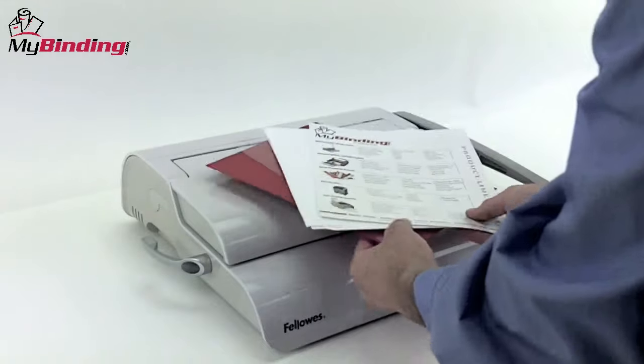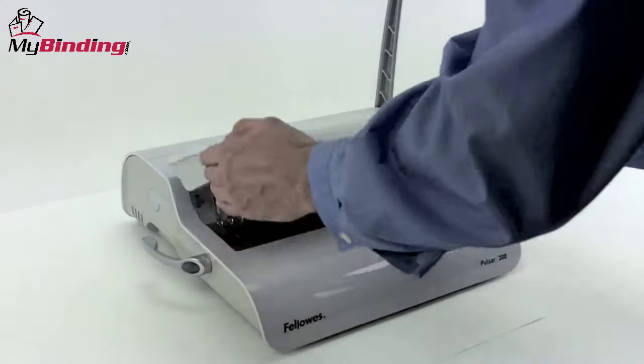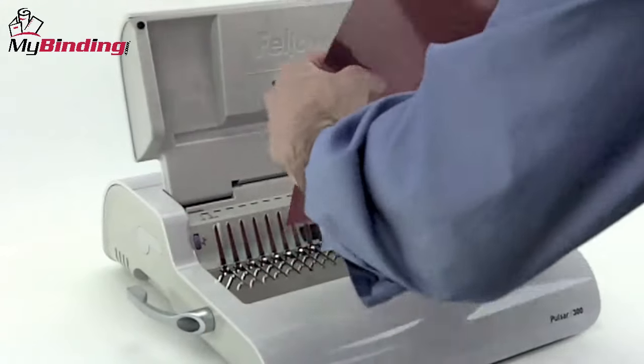Comb binding is really simple with the Fellowes Pulsar 300. Let's go step by step as we make a book. After practicing on a few scrap pieces of paper, let's begin with the covers.